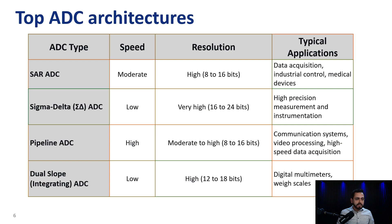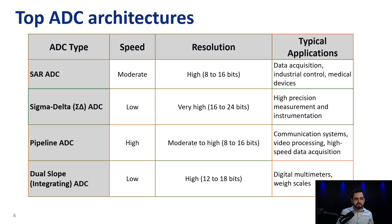Next, we have pipeline ADCs, which are known to be the highest-speed ADCs. They offer up to hundreds of mega samples per second of sampling rate, and some can go up to gigasamples per second. They offer moderate to high resolution, up to 16 bits, and are used in a lot of telecommunications, video processing applications, and high-speed data acquisition.